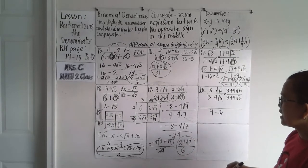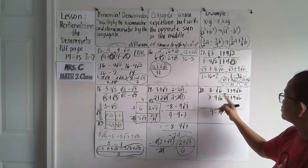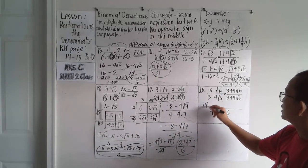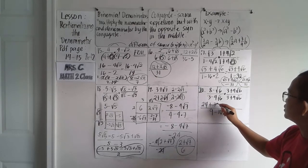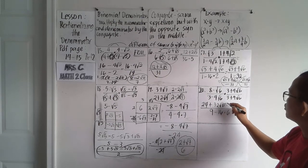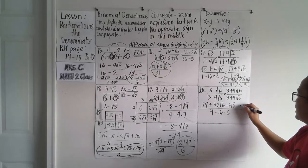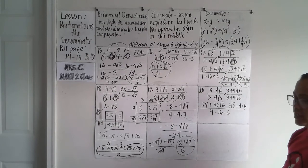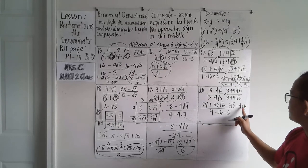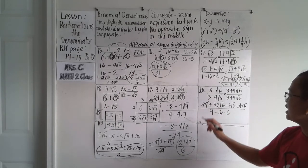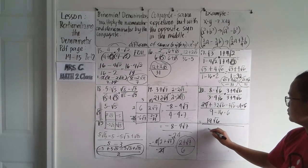For the denominator using difference of squares: three times three is nine, and four square root of six times four square root of six gives sixteen times six which is 96, so nine minus 96 is negative 87. For the numerator using FOIL: eight times three is 24, eight times four square root of six is 32 square root of six, minus three square root of six, and negative four times six is negative 24. The 24s cancel, leaving 32 minus three which is 29 square root of six as the numerator term.